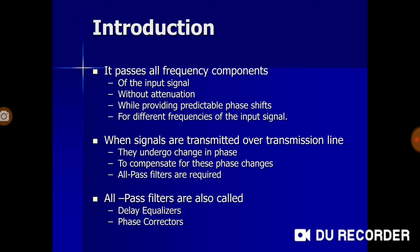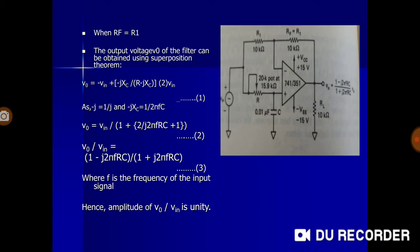Why do we need this filter? When signals are transmitted over transmission lines in communications from one end to another, they undergo a change in phase as they are traveling. To compensate for these phase changes, all-pass filters are required. All-pass filters are also called delay equalizers and phase correctors — two names depending upon the type of work they do.